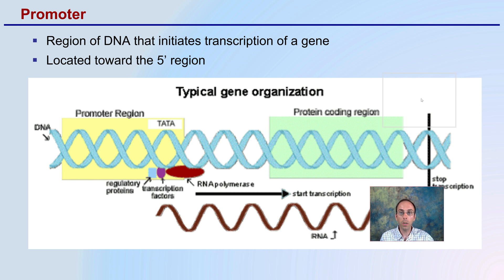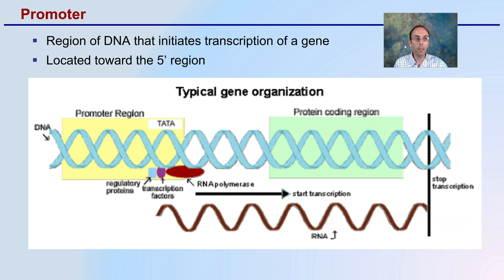The promoter region in a DNA sequence is the region of DNA that initiates the transcription of a gene. The promoter is like the on or off switch to a light. It's located towards the 5' end, and it will initiate or allow that coding region to be expressed into our RNA sequence.